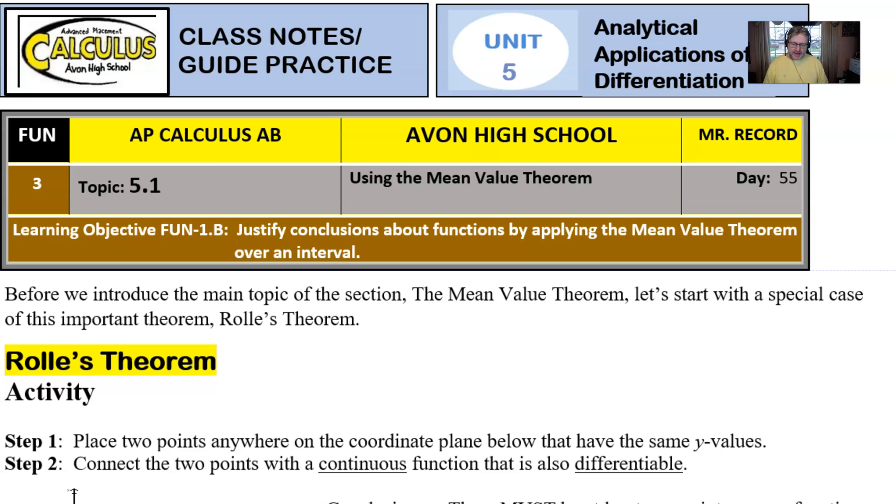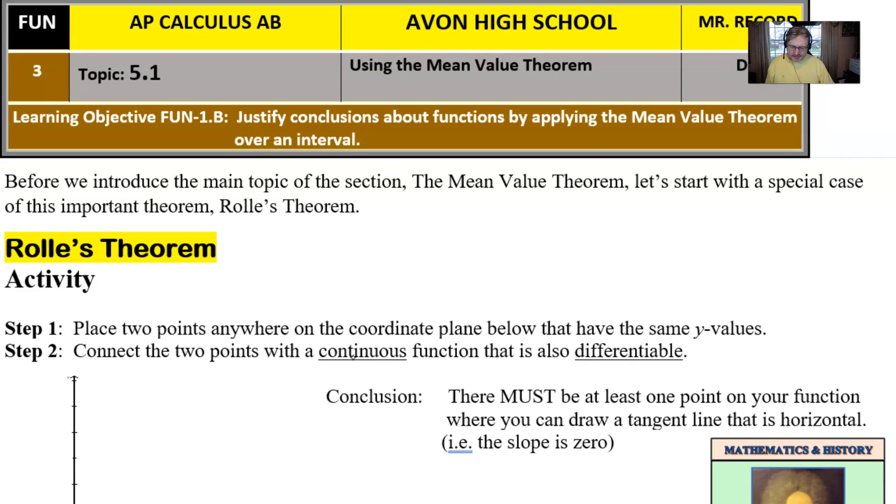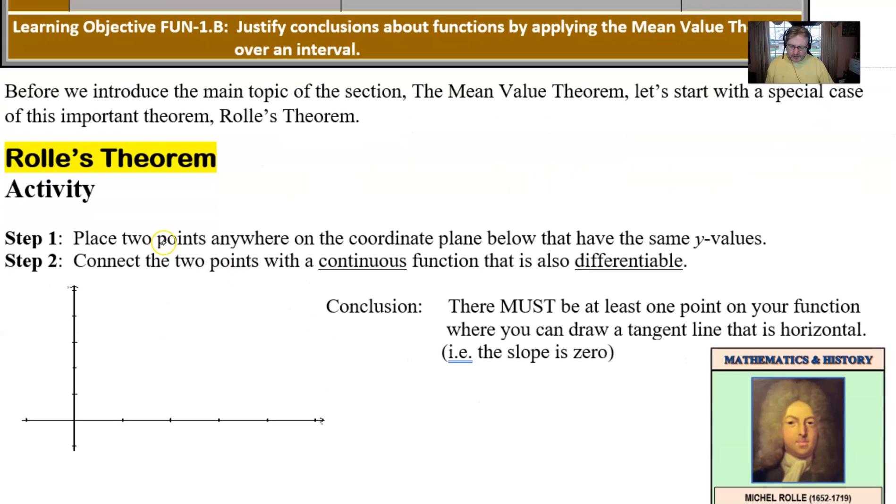We're going to start with a little activity here, the opening stages of the notes. So let's take a look here at this particular graph where you have a couple of steps here. I want you to place two points anywhere on this coordinate plane below. The only stipulation is that they have to have the same y values initially. So they have to have different x's, but the same y.